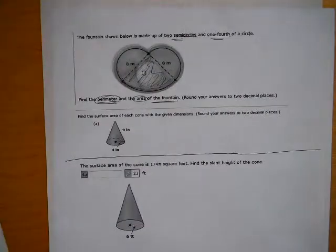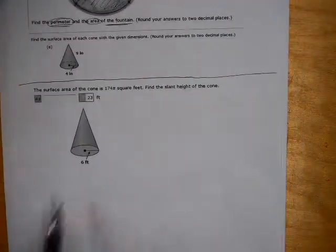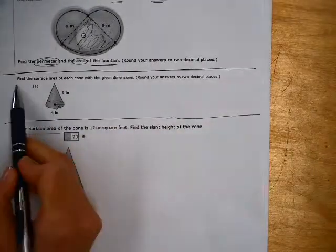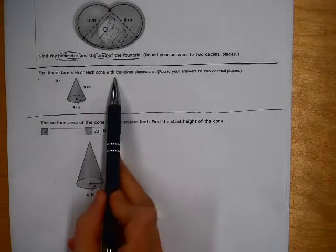So these two problems here from section 12.2, and they deal with surface area of the cone. Find the surface area of each cone with the given dimensions, round your answer to two decimal places.